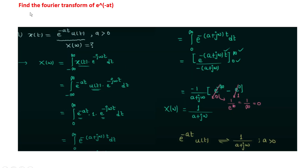The next question asked: find the Fourier transform of e to the power minus at. The Fourier transform of e^(−at) will be 1 upon (a + jω). You can work through the calculation part on your own.